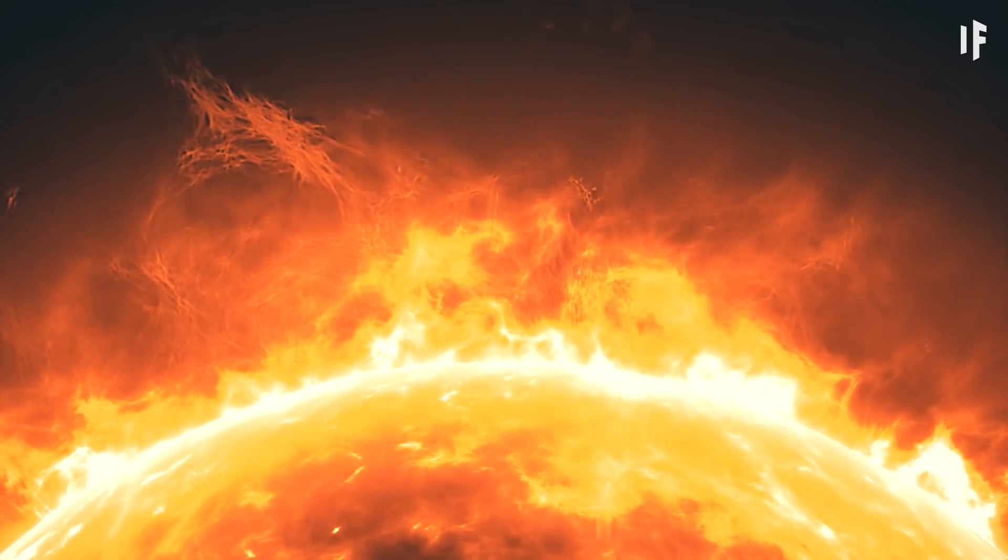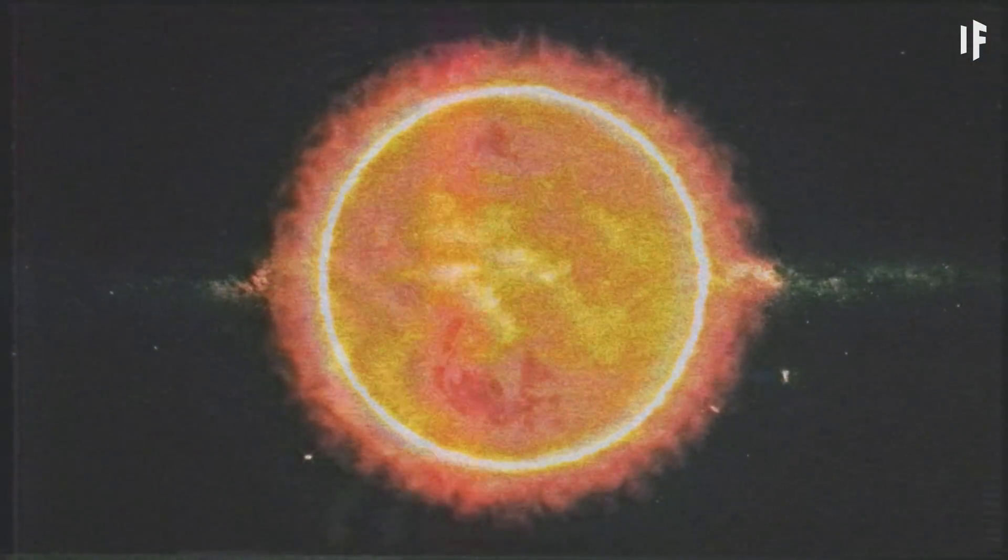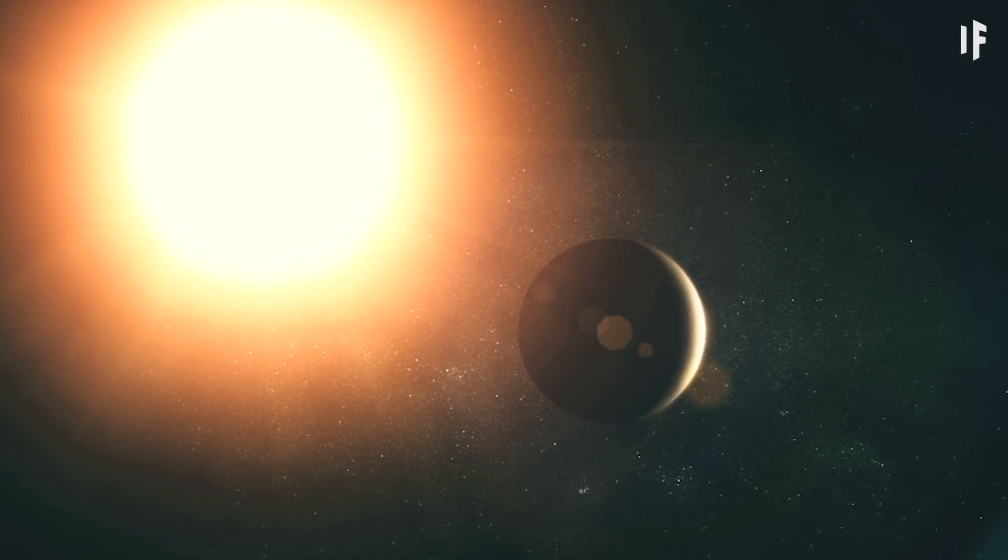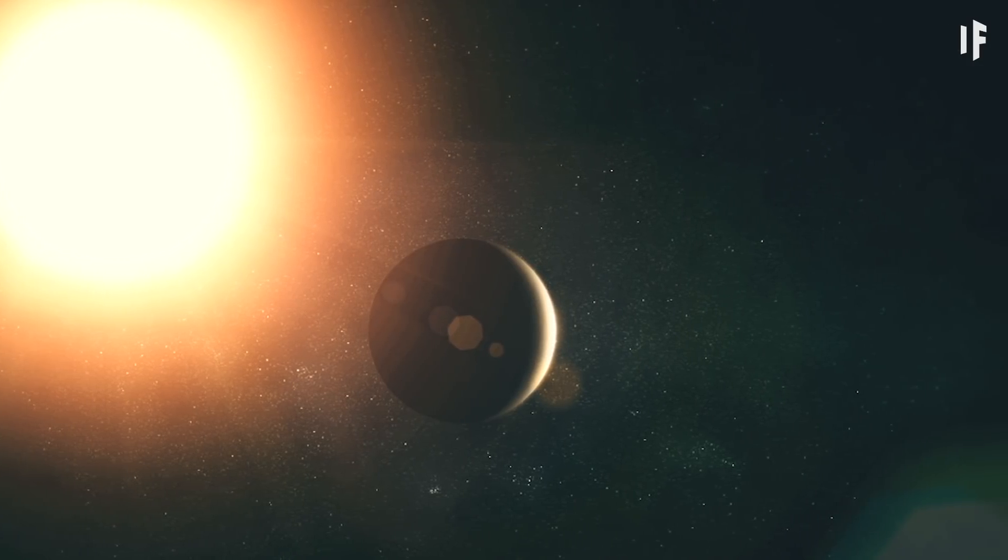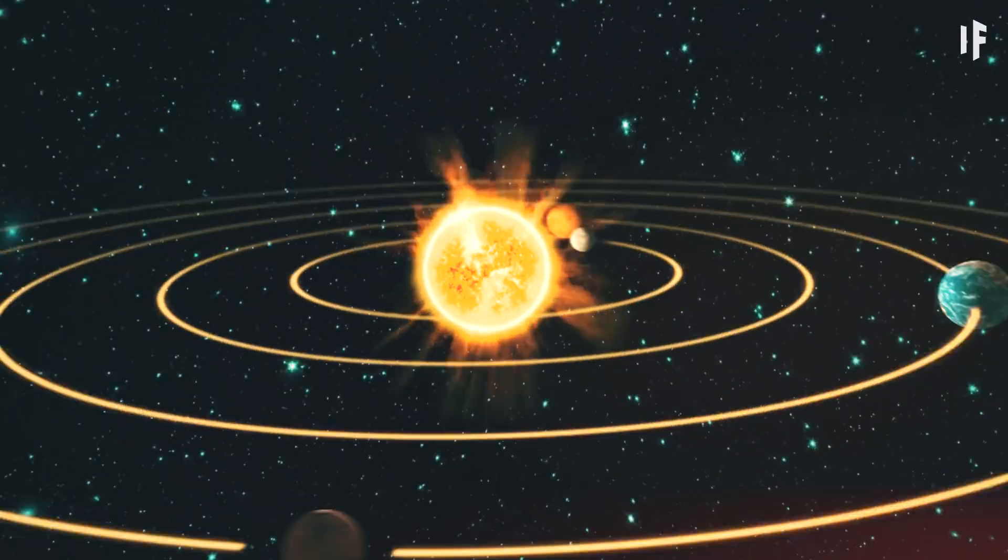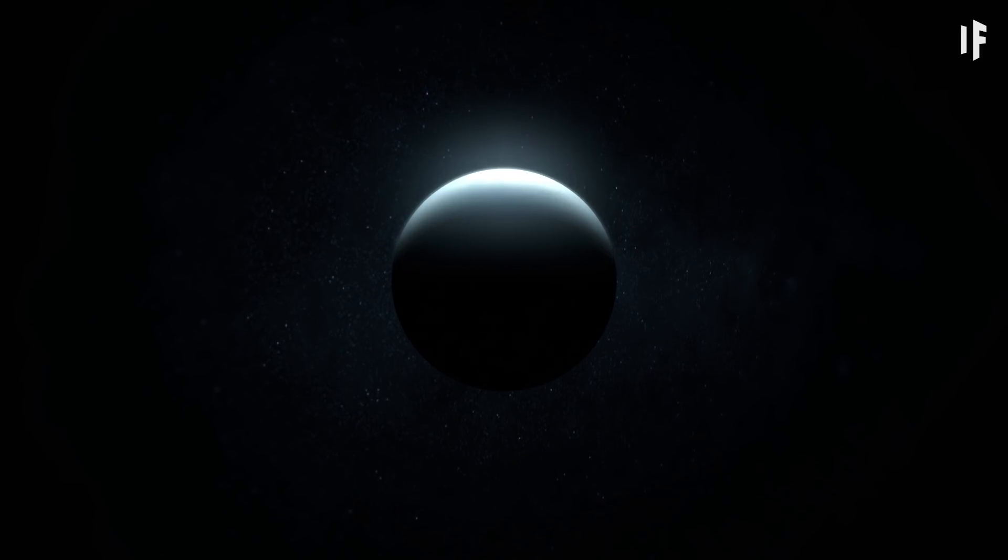Another theory is that while the Sun was still growing inside its stellar nursery, it might have captured an object from another star system residing within that nursery. So in a sense, Planet Nine was kidnapped from another star system. Either way, there's still a lot of speculation about how it got there and even if it's out there at all.